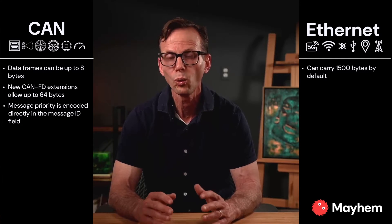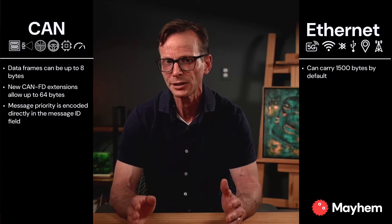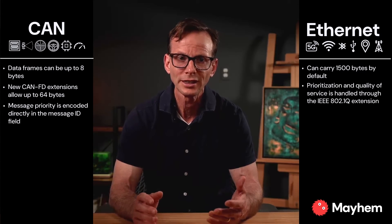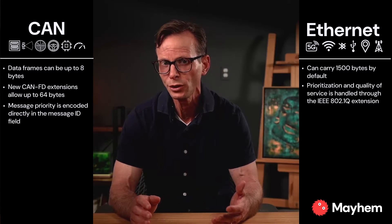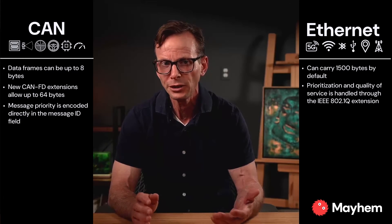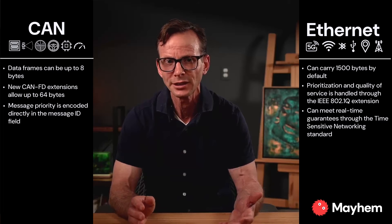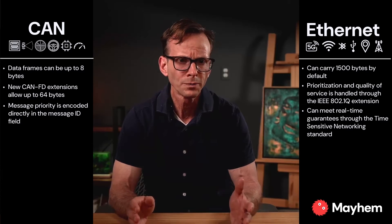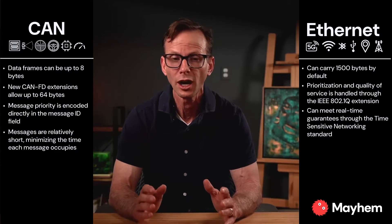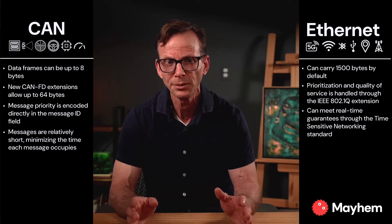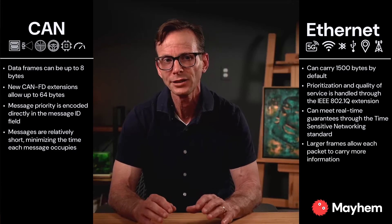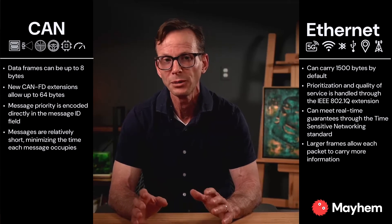Ethernet frames, however, can carry a whopping 1500 bytes by default, and even more if jumbo frames are enabled. Prioritization and quality of service is handled through IEEE 802.1Q, which introduces VLAN tagging and priority fields in messages. Ethernet can also meet real-time guarantees through the time-sensitive networking standard. Overall, CAN messages are relatively short, and that short size minimizes the time each message occupies on the bus and reduces overall delays before other messages can be sent. Ethernet's larger frames allow packets to carry more information, which is better for information-heavy services.